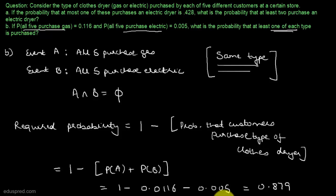So the probability that at least one of each type is purchased is equal to 0.879. And this is all for the solution of this question.